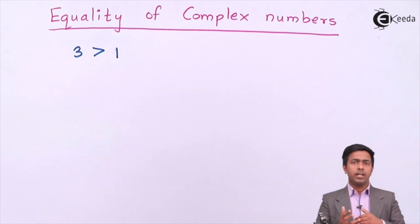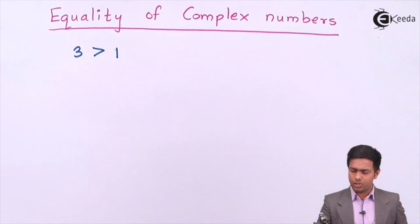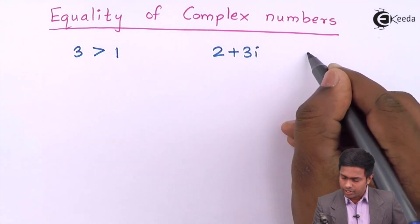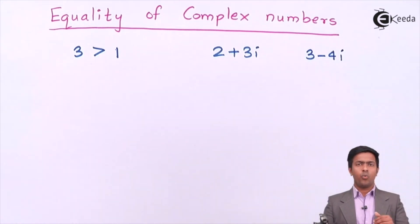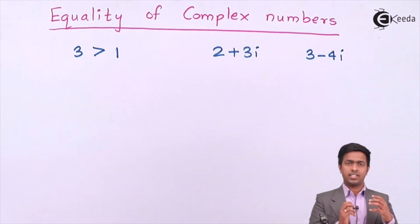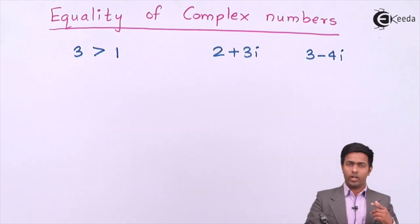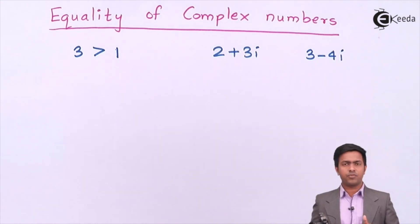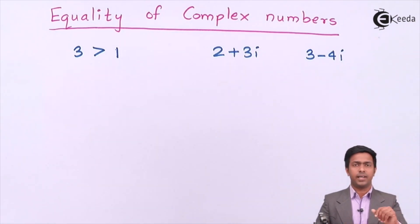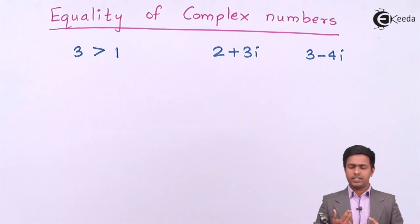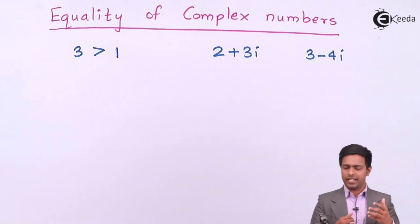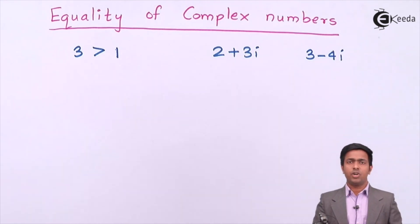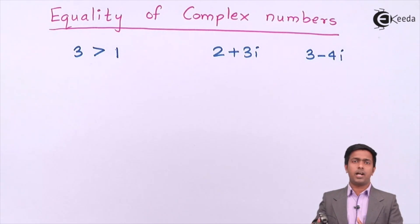But when it comes to complex numbers, it becomes difficult. Let's say I have one complex number 2 + 3i and another complex number 3 − 4i, and I ask you which is greatest. That means I am asking the order relation between them — whether 2 + 3i is greater than 3 − 4i, or vice versa. Some people say we can judge from the greater real part or the greater imaginary part of a complex number.